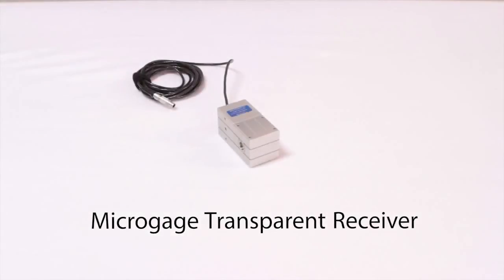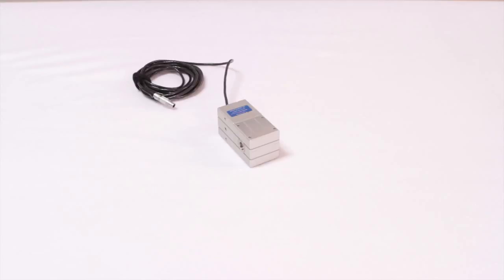The micro gauge transparent receiver is also made with the same high quality features as other Pinpoint products. The transparent receiver allows the laser reference beam to enter one side of the receiver and pass cleanly through and out the other side.